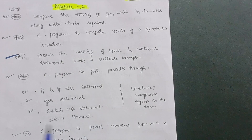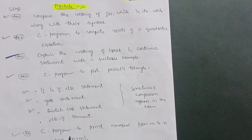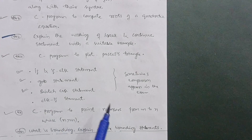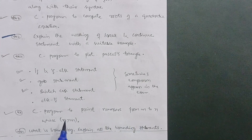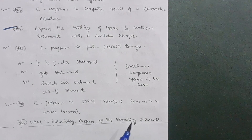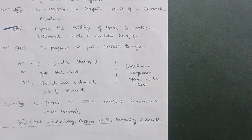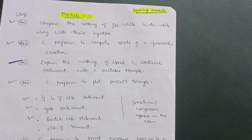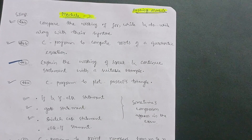Next, write a C program to print numbers from M to N where N is greater than M. Another important question: what is branching — explain all the branching statements. This is enough content for module two. You can cover this much so that it becomes easier to pass; no need to go into great depth.